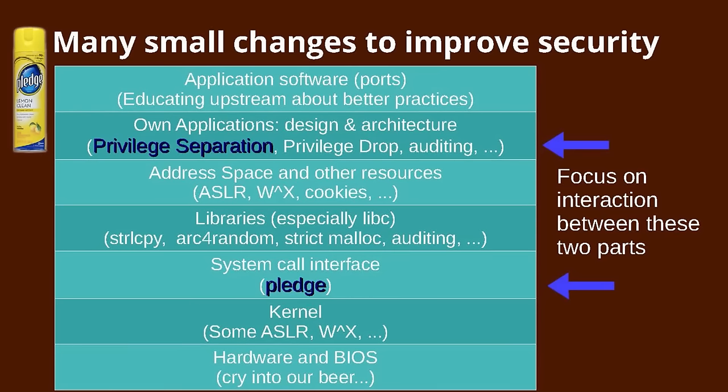In OpenBSD we generally try to work at all of the layers of the software stack. I've emulated the OSI stack here to show the different components, and at different levels we've been able to have different types of influence on the software ecosystem — not just in OpenBSD but also in other operating systems. The two I'm going to focus on are privilege separation, which we do at an application level, and pledge, which is at the system call level.